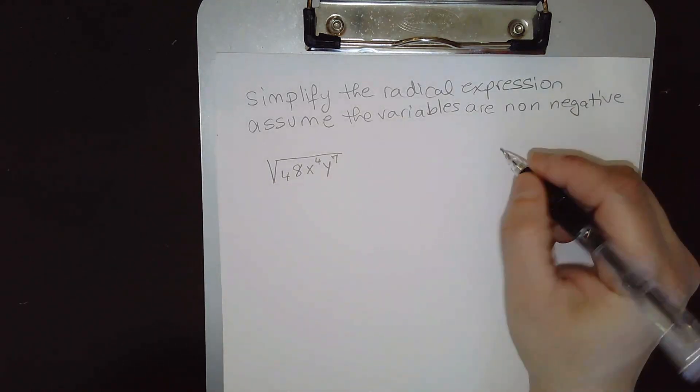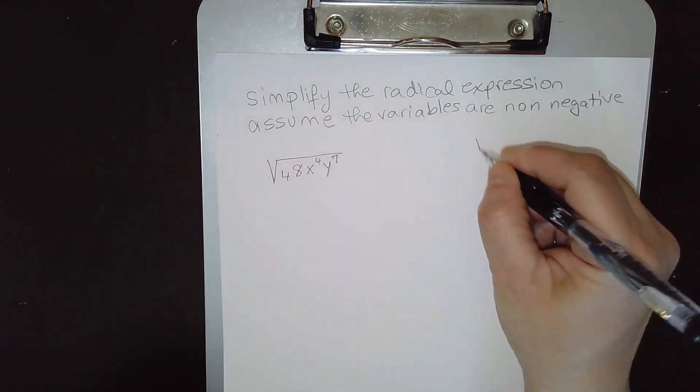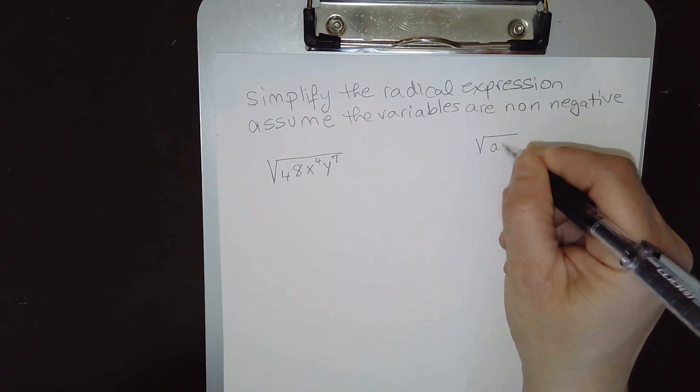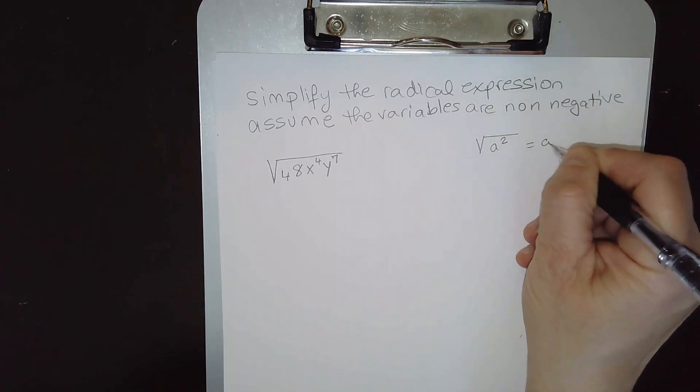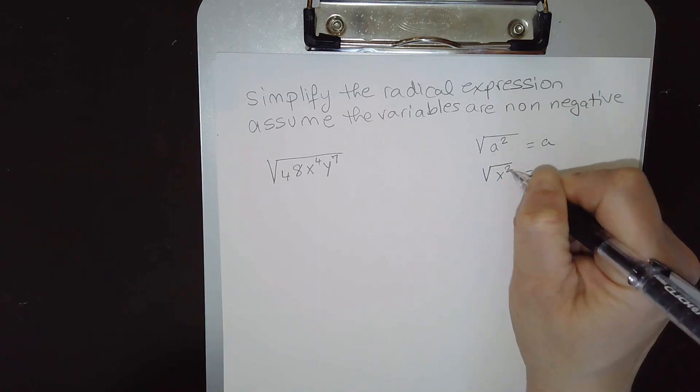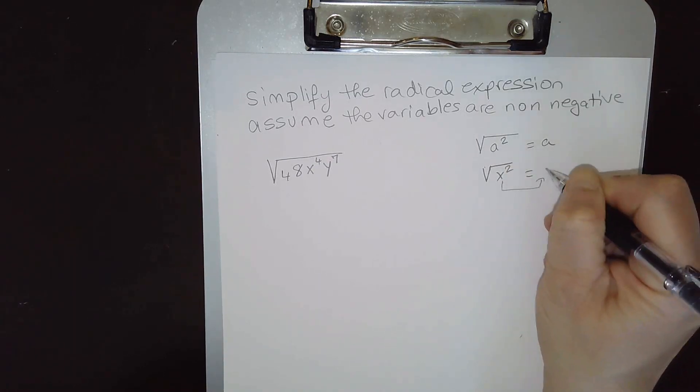Now for an expression to come out completely, it has to be a perfect square. So for instance, square root of a² is equal to a. So if you have square root of x², that comes out, the square cancels the square root, and that comes out as x.